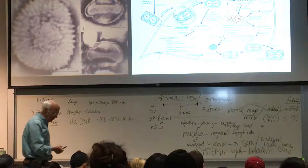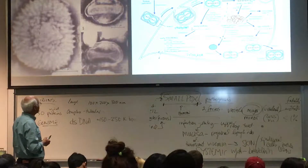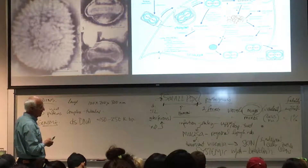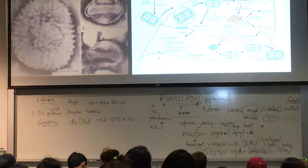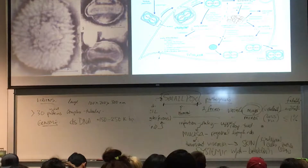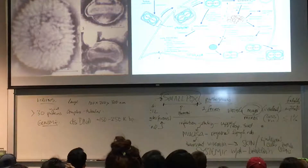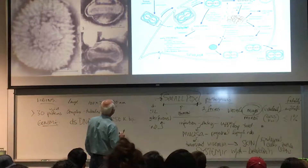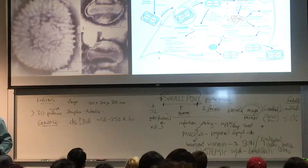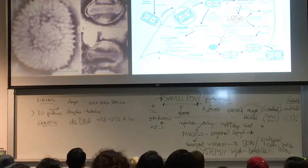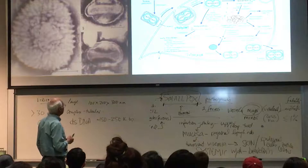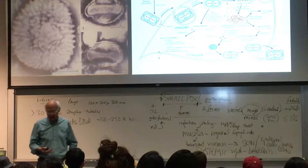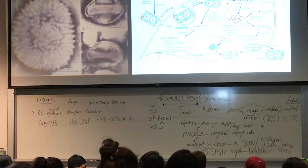The early gene products are enzymes important for nucleic acid synthesis. We generate the viral DNA polymerase — the virus makes its own — a thymidine kinase, as seen also with herpesviruses, and an RNA polymerase. In addition, the virus also generates gene products that antagonize host responses. These factors affect the virulence and pathogenesis of the virus, and these proteins typically down-regulate innate responses.